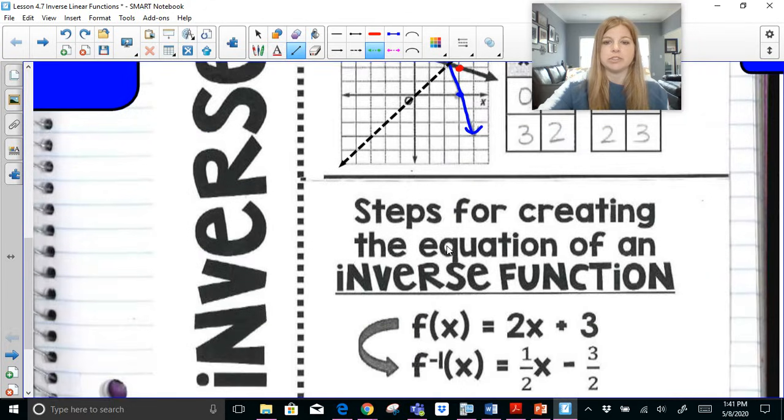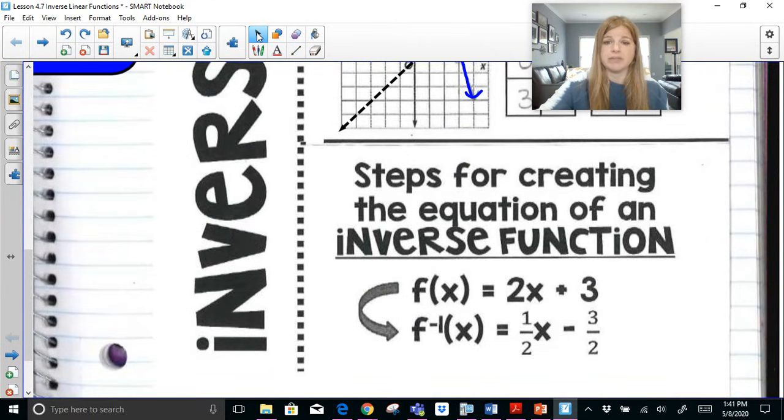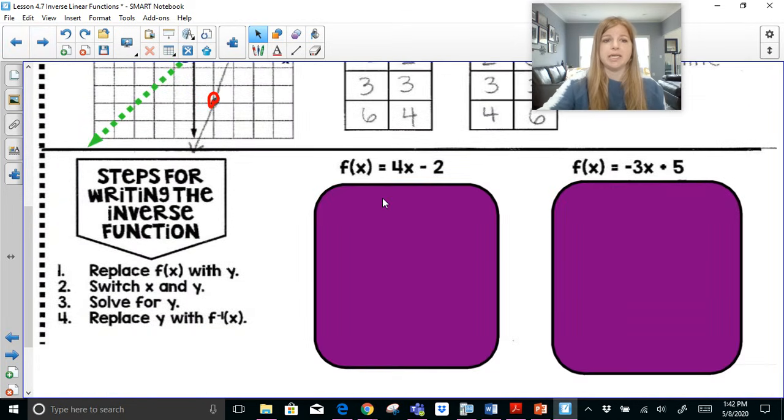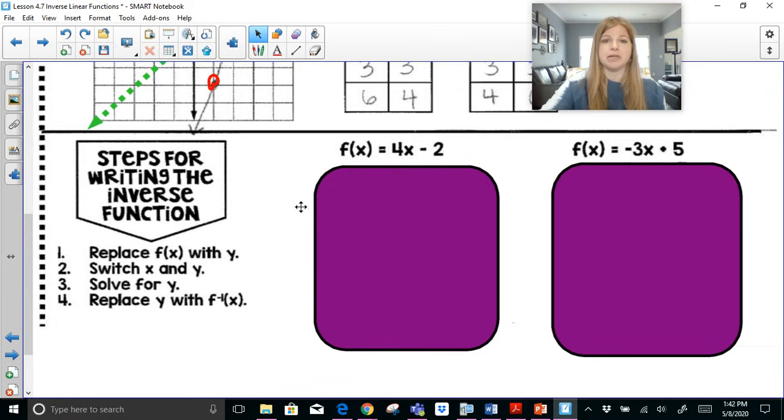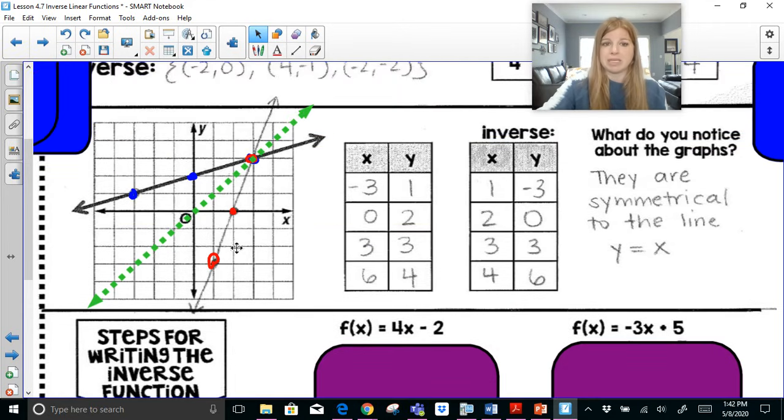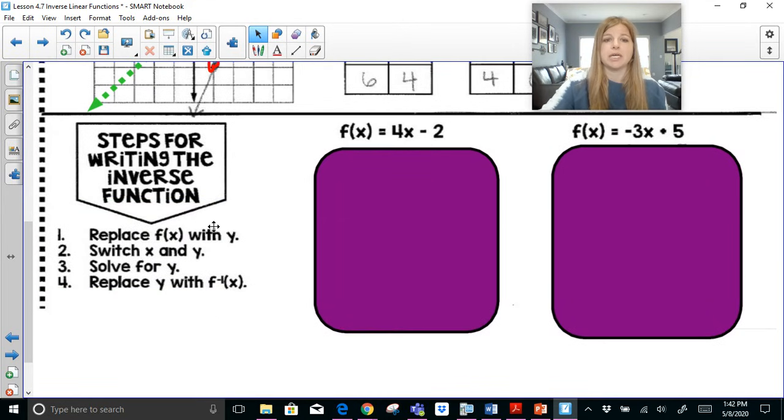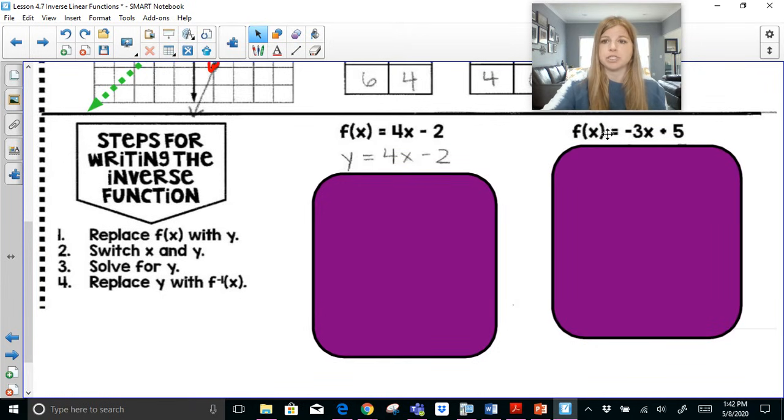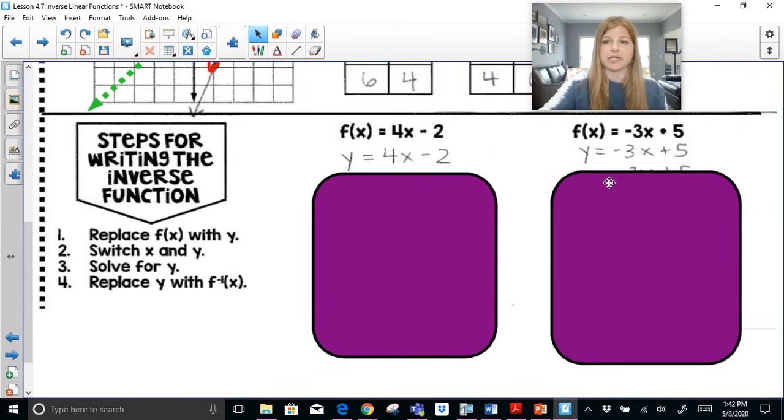The last thing I want to show you is the steps for creating an equation of an inverse function. It's a four-step process, so follow along with me here. First step: if I want to take this function here and write the inverse equation, the equation that would actually be the line of that new inverse that we graphed, you first replace f(x) with y. I'm actually going to do these two problems side by side. So first step is replace f(x) with y.